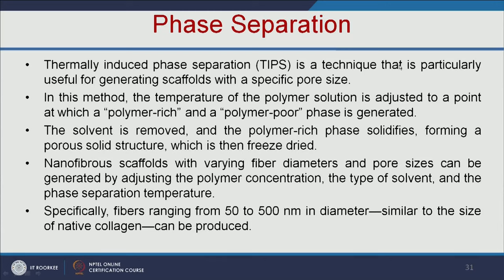Phase separation involves dissolving a polymer in a solvent at high temperature, followed by liquid-liquid or solid-liquid phase separation induced by lowering the solution temperature. This thermally induced phase separation technique is mainly useful for generating scaffolds with specific pore sizes. The temperature of the polymer solution is adjusted to generate a polymer-rich and polymer-poor phase. The solvent is removed, the polymer-rich phase solidifies into a porous solid structure, which is then freeze-dried. Nanofiber scaffolds with varying fiber diameters and pore sizes can be generated by adjusting polymer concentration, type of solvent, and phase separation temperature. Fibers ranging from 50 to 500 nm in diameter can be easily achieved, closely mimicking the extracellular matrix.